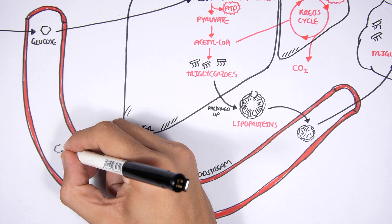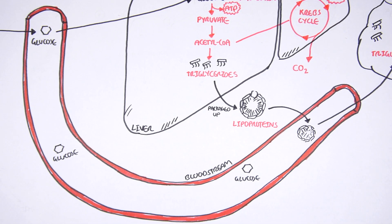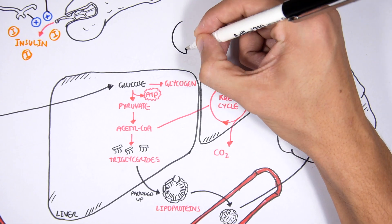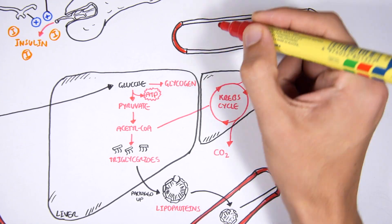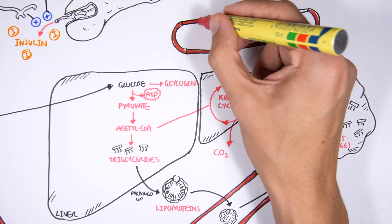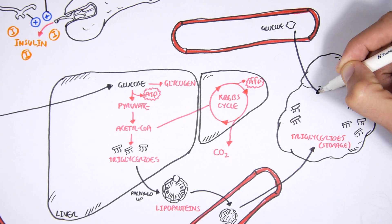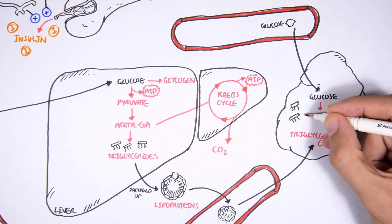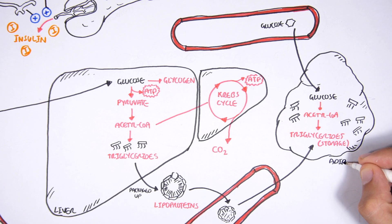Just after we eat, as blood glucose increases, glucose can also be taken up by adipose tissues and converted to acyl-CoA to make fatty acids and then triglycerides, which are then stored in the adipose tissue.